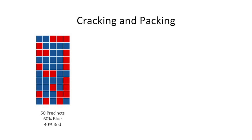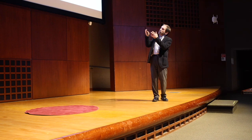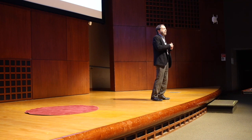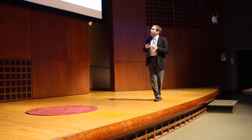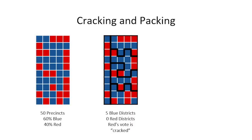Here's a very simple toy state. There are 50 precincts — each of those little squares — with 100,000 voters each. Each square is either red or blue to indicate whether all the voters in that precinct vote for the red party or blue party. Overall there are about 60% blue precincts and 40% red precincts.